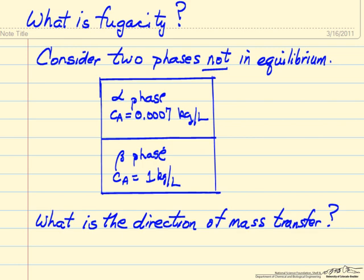We're always looking at how systems approach equilibrium. In this case we might look and say, well a very high concentration of A in this phase, we might expect mass transfer to go to the lower concentration. However, for this particular system,